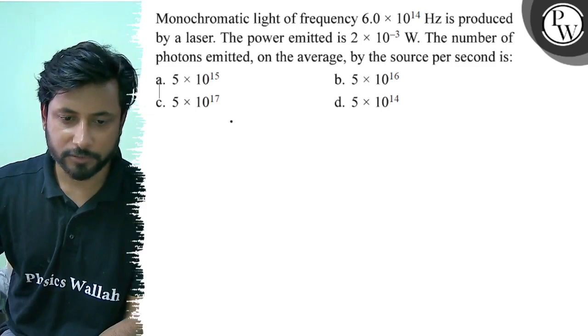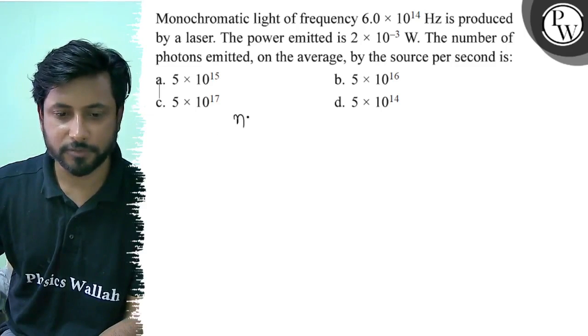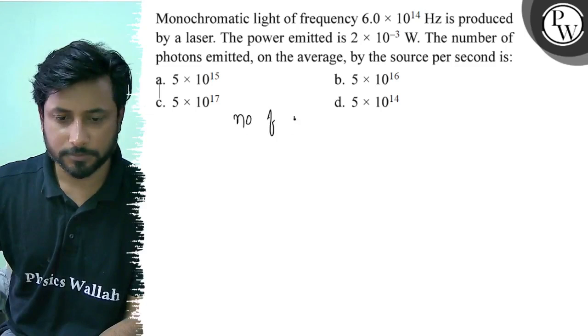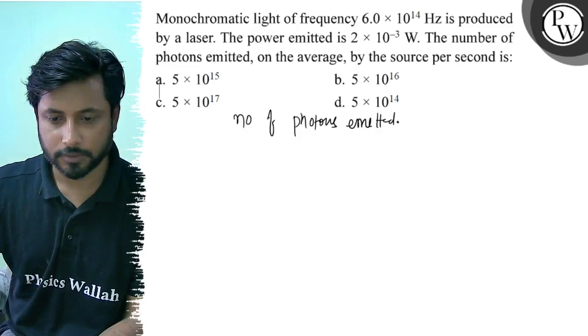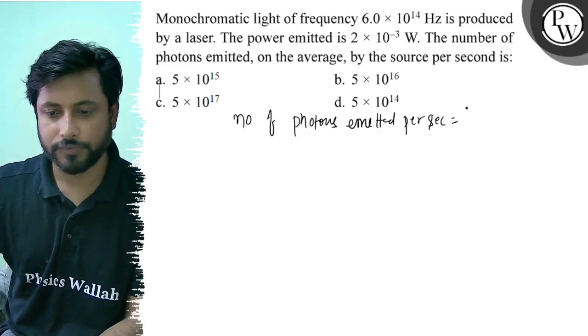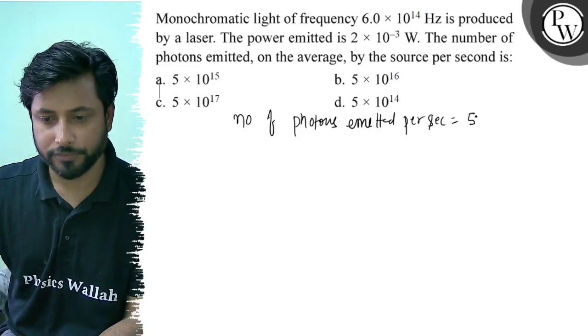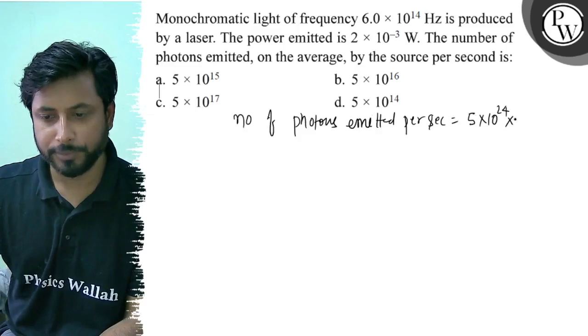Okay, the formula for number of photons emitted per second equals 5 × 10^24 into P lambda.